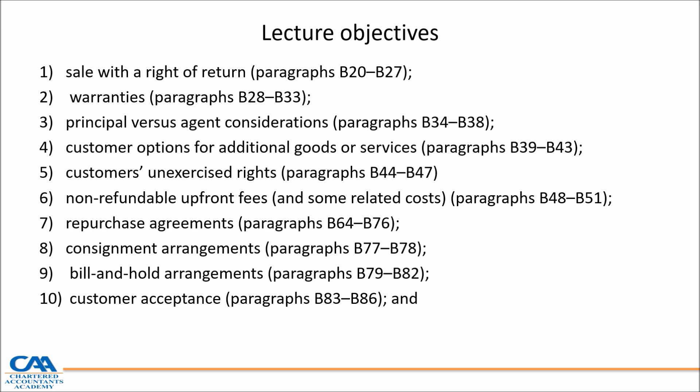At the end of this lecture, you should know how to account for the following items: a sale with the right of return, warranties, principal versus agent considerations, customer options for additional goods or services, customers' unexercised rights, non-refundable upfront fees, repurchase agreements, consignment arrangements, bill and hold arrangements, and customer acceptances. Please know where to find this in your Part A standard, as it gives you the paragraph references and illustrated example references. If you know where to find this, in the test or exam you will be covered.